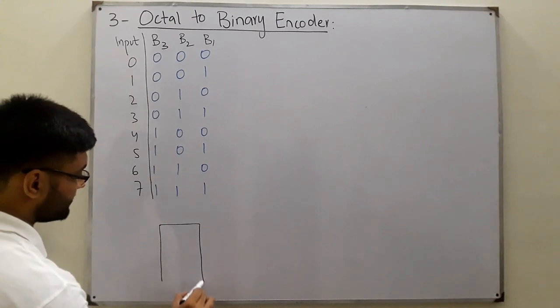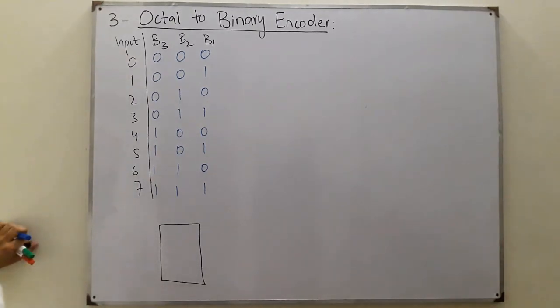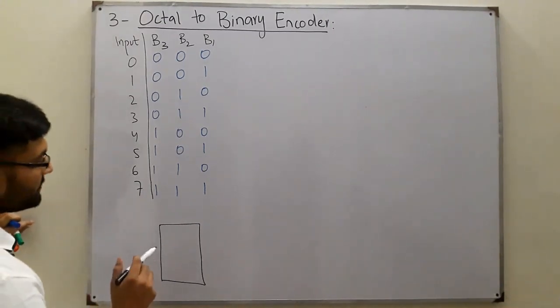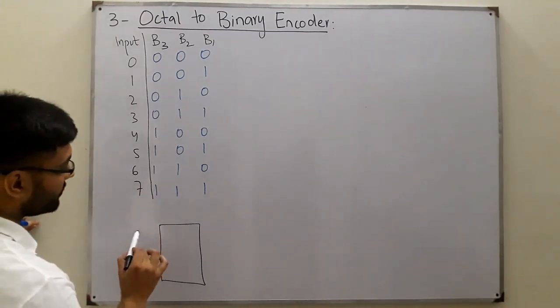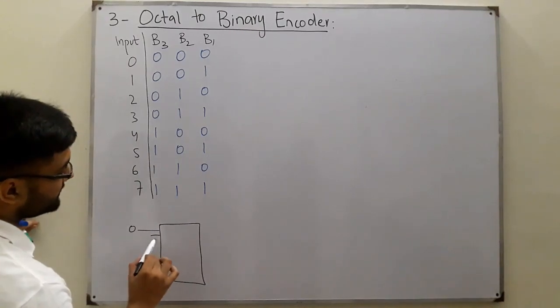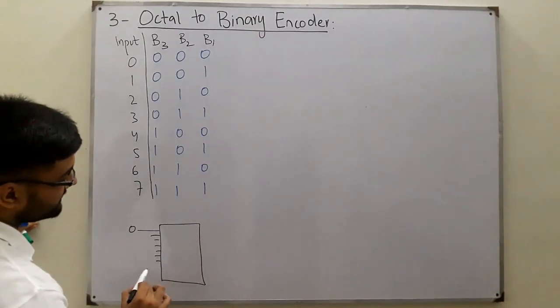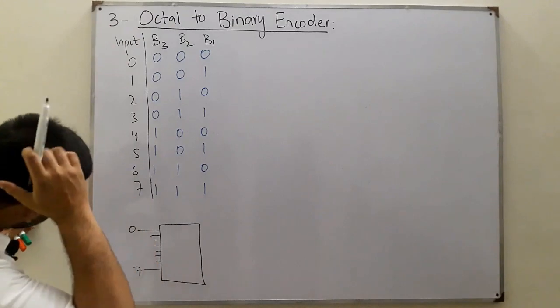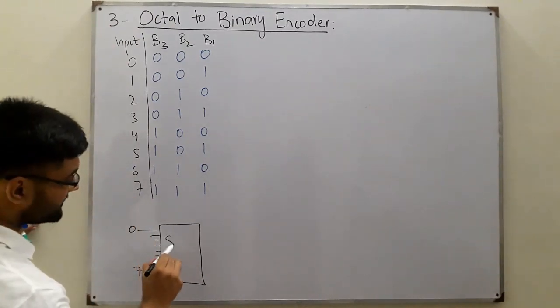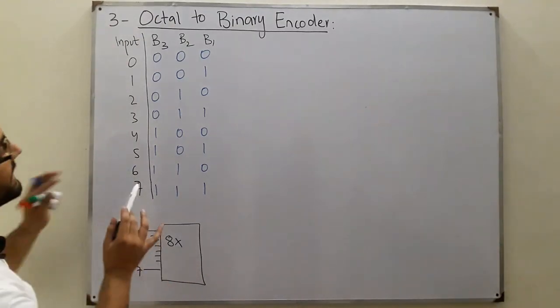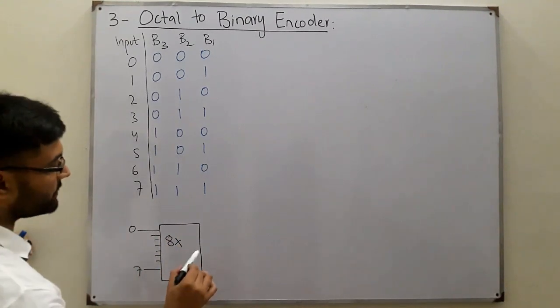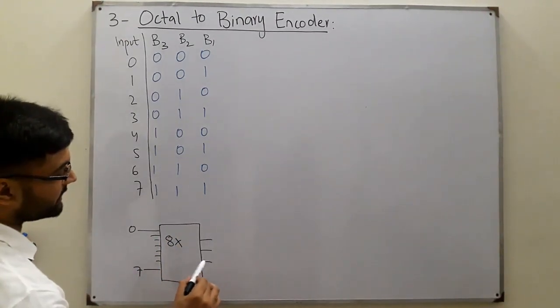We have 8 input lines. How many input lines? From 0 to 7, of course. So we have 0, 1, 2, 3, 4, 5, 6, and 7. These are 8 input lines, which means 8 cross, and the output we have 3 bits.